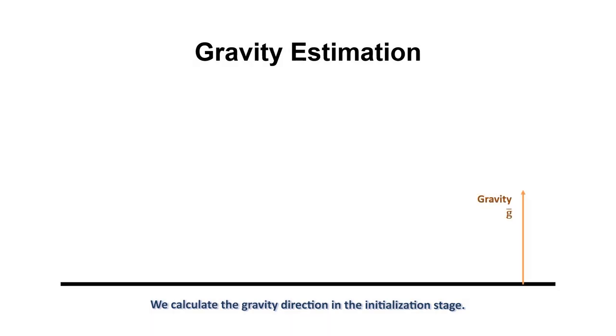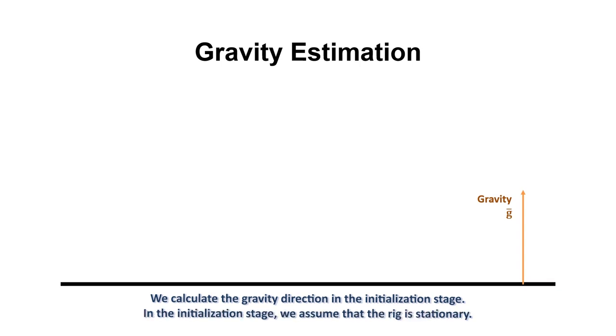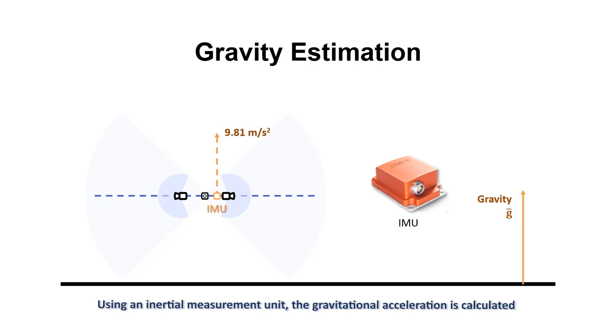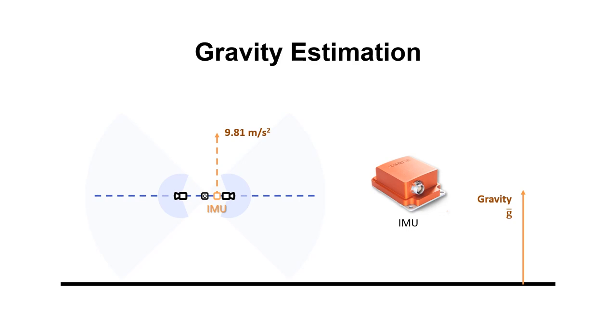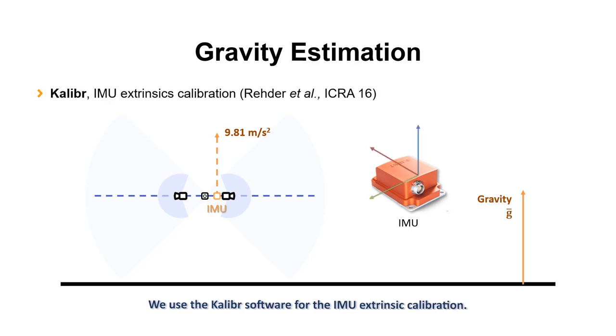We calculate the gravity direction in the initialization stage. In the initialization stage, we assume that the rig is stationary. Using an inertial measurement unit, the gravitational acceleration is calculated by taking average of the accelerometer values accumulated for a short period of time. We use the Kalibr software for the IMU extrinsic calibration.